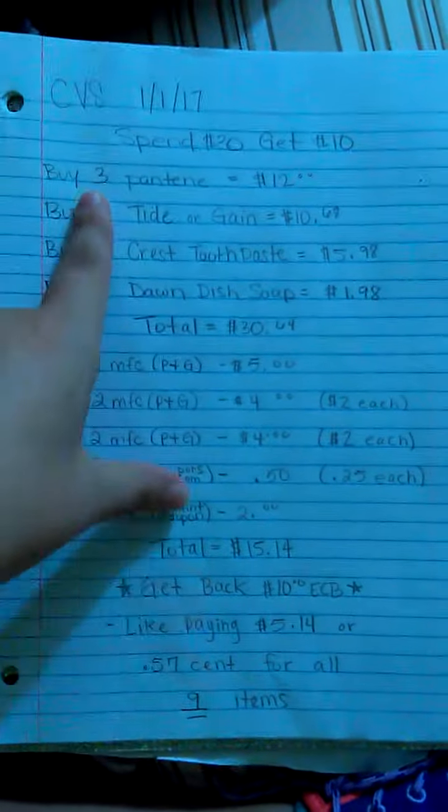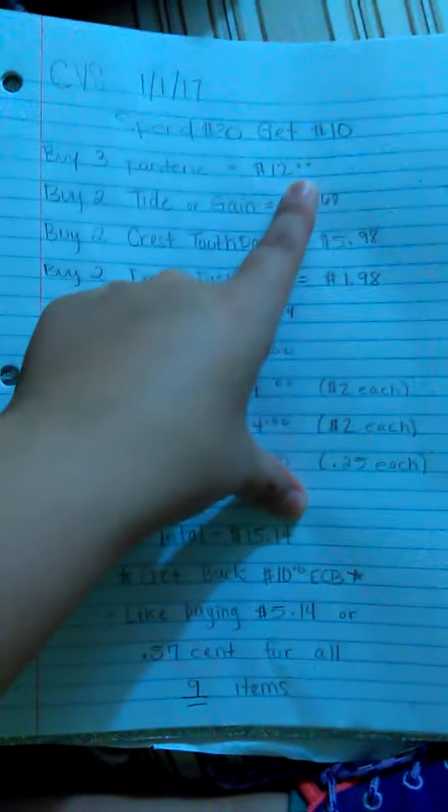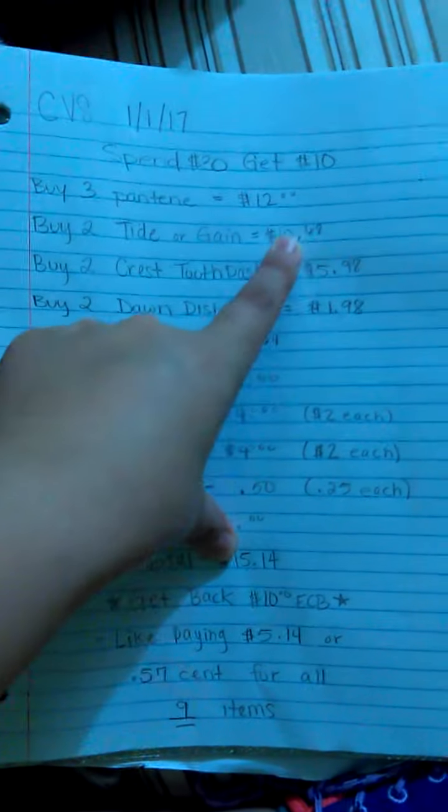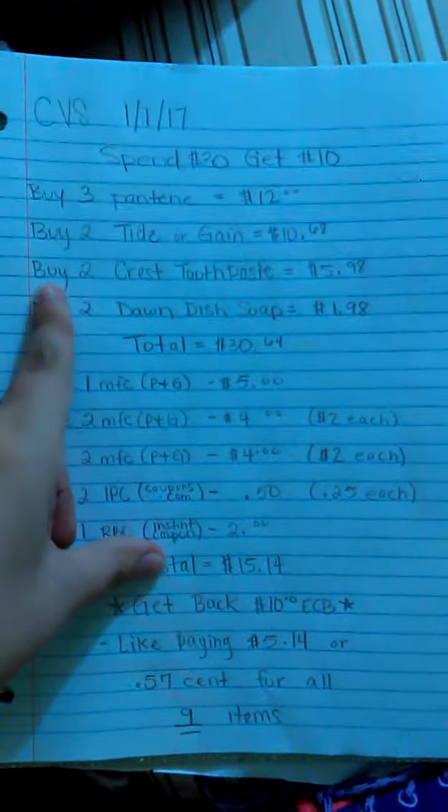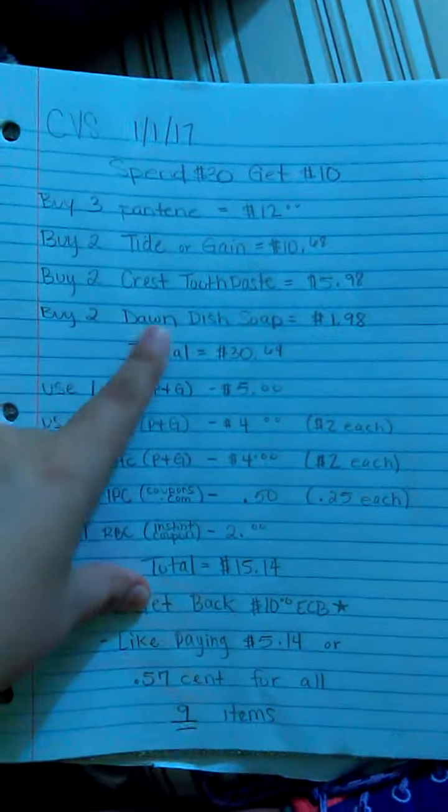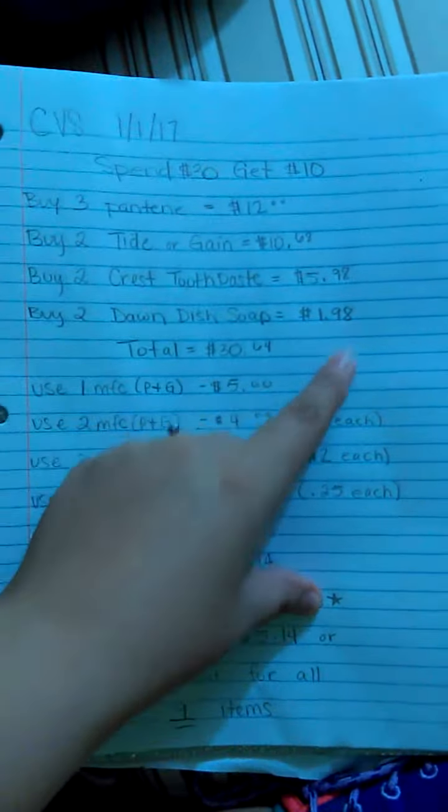First you're going to buy three Pantene for $12. You're going to buy two Tide or Gain for $10.68. You're going to buy two Crest Toothpaste for $5.98 and buy two Dawn Dish Soap for $1.98.